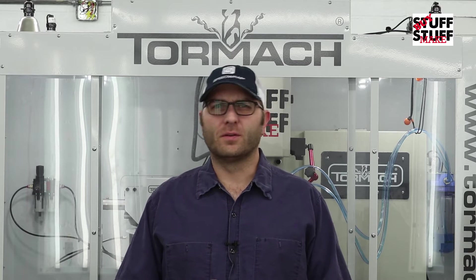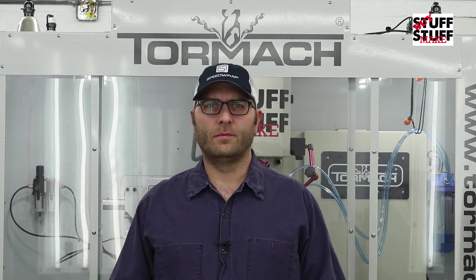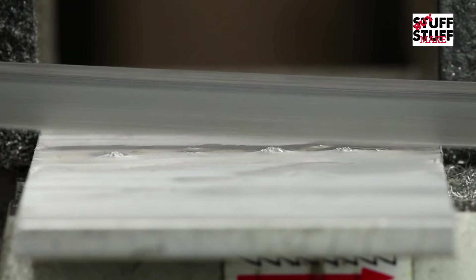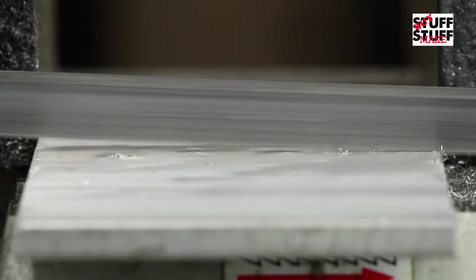Welcome to another edition of Buy Stuff Make Stuff. Today we're getting in the holiday spirit and we're gonna make a Christmas ornament. We're gonna try our hand at engraving and doing a little surface treatment or finish kind of thing to see how that works, so stick around.